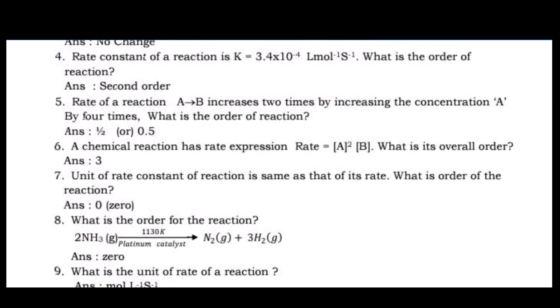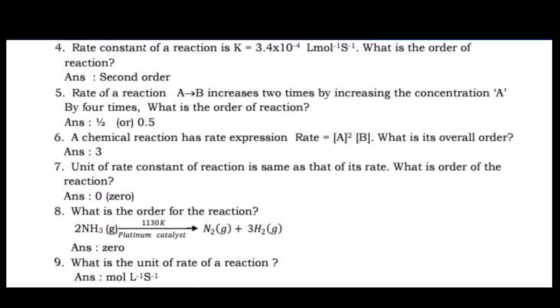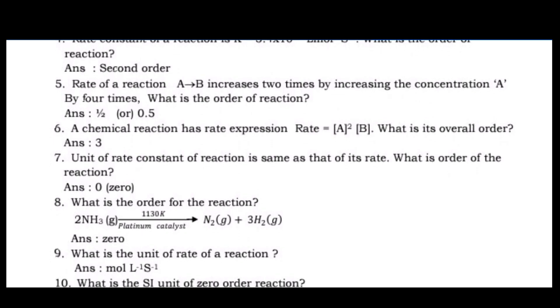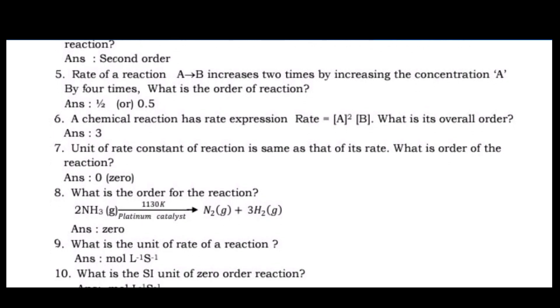Question 6: A chemical reaction has rate expression: Rate = k[A][B]². What is its overall order? Answer: 3.